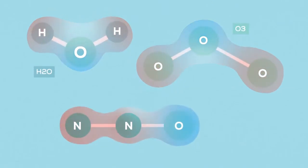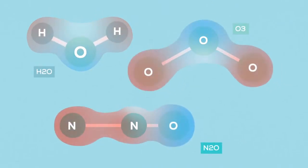For example, water, ozone, and nitrous oxide are all electrically lopsided, so they all absorb infrared radiation. Then, there are gases like carbon dioxide and methane.